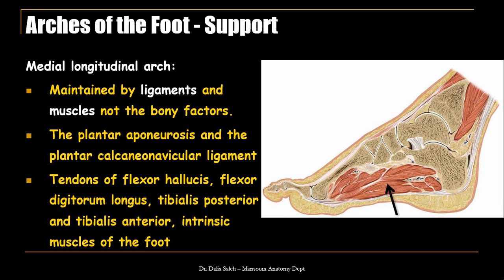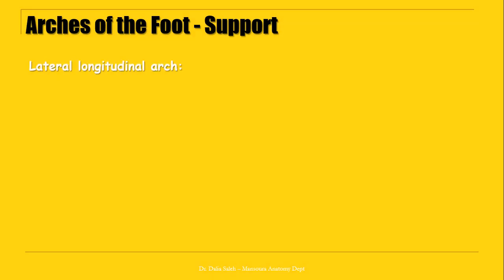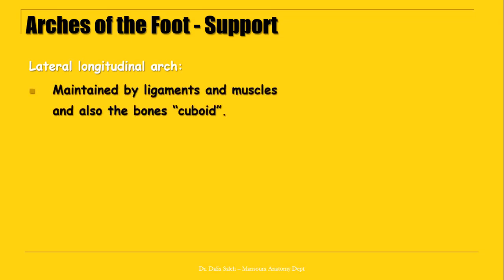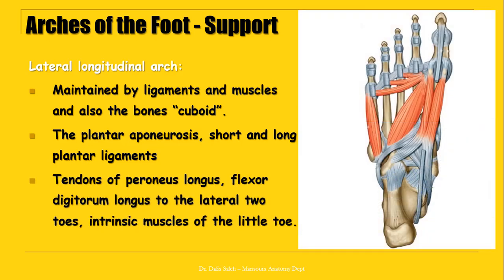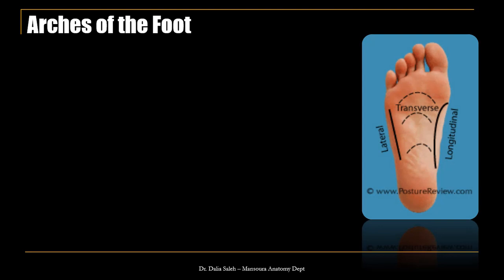For the lateral longitudinal arch, it is maintained by ligaments, muscles, and also by the shape of the bones — especially the wider shape of the cuboid. The ligaments that maintain this arch include the plantar aponeurosis and the long and short plantar ligaments. For the muscles, the tendon of peroneus longus crosses the sole of the foot from lateral to medial, and also the lateral tendons for the flexor digitorum longus muscle and the intrinsic muscles of the little toe.